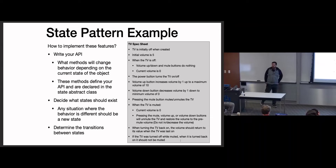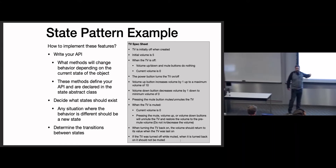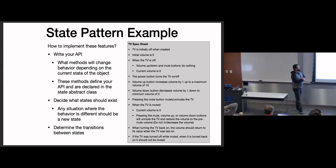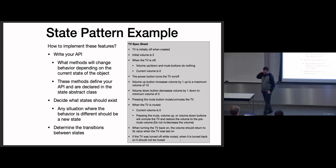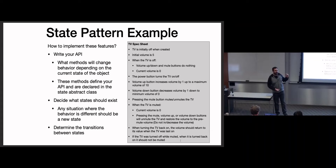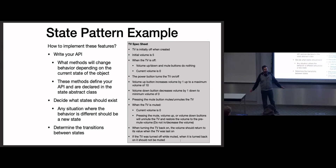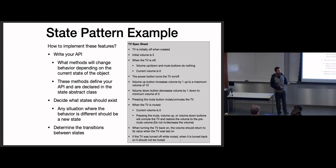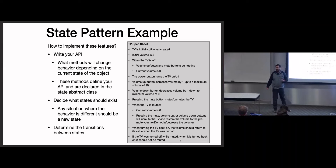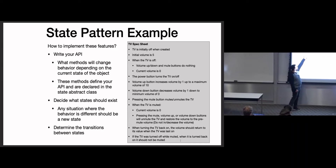Three steps to apply the state pattern. First, write your API — what methods will you defer to your state for functionality? Any method that can ever do something different in any situation should be deferred to the state. Second, decide what states you should have — what different scenarios cause a different set of behaviors? Third, determine your state transitions — which method calls on which states trigger transitions to other states.